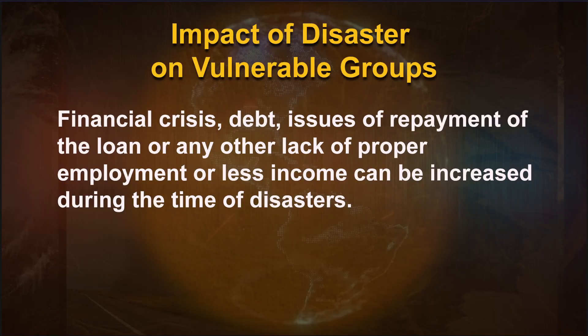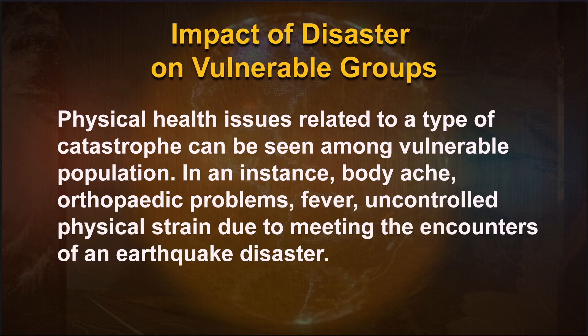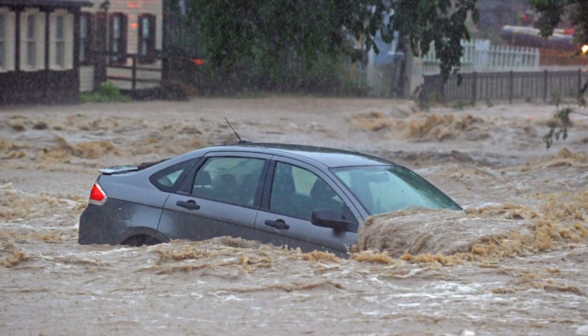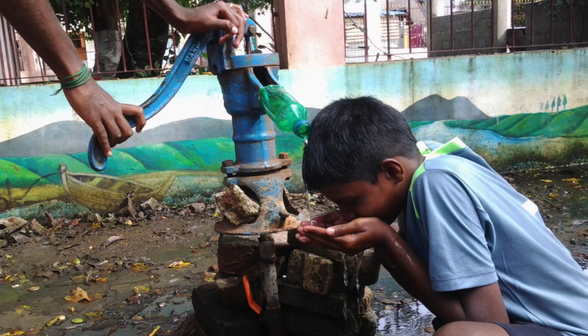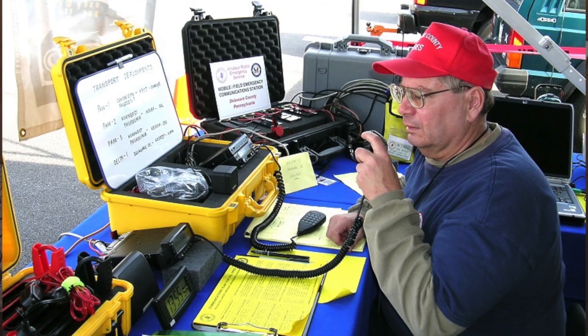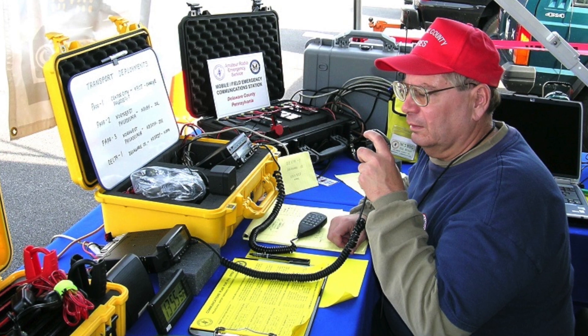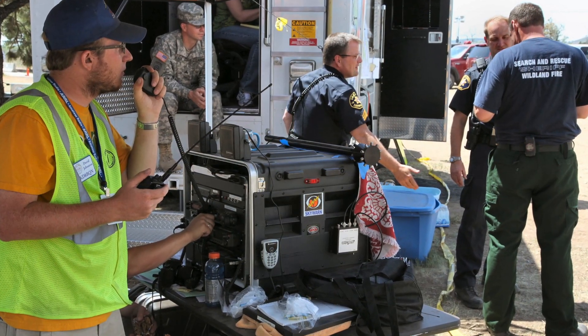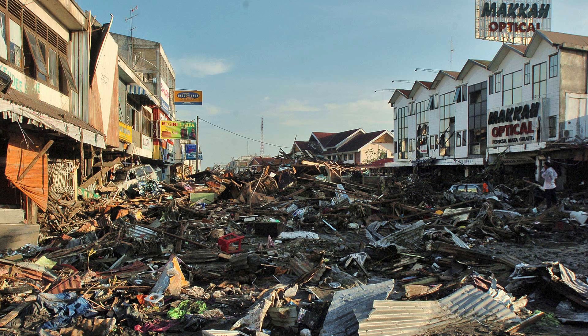Financial crisis, debt, issues of loan repayment, lack of proper employment or reduced income can increase during the time of disasters. Physical health issues related to a catastrophe — such as body ache, orthopedic problems, fever, and physical strain from an earthquake — can be seen among vulnerable populations. Recurring floods can cause waterborne and communicable diseases. The social impact causes less support from stakeholders, minimum networking, absence of proper communication, and less social interaction during and after disasters.